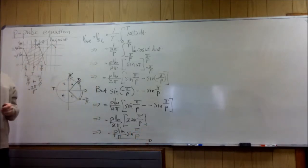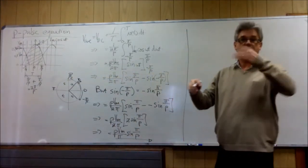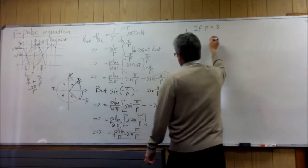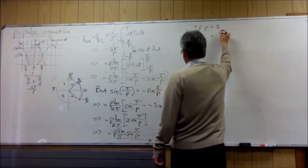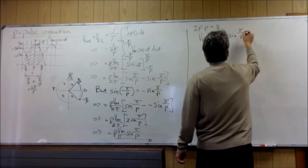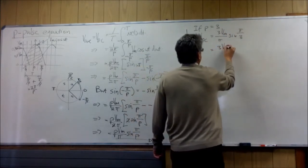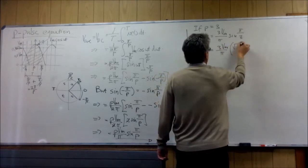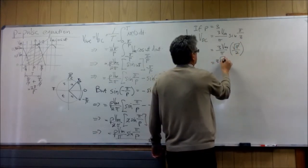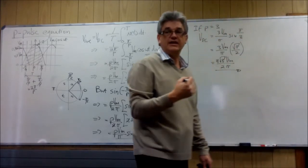And there is the p-pulse equation. Let's test it — we already know the 3-pulse result. If p = 3, then V_DC = (3·V_max / π)·sin(π/3). The sin of π/3 is 60°, which equals √3/2. So our answer is 3√3·V_max over 2π, which matches what we have already derived.